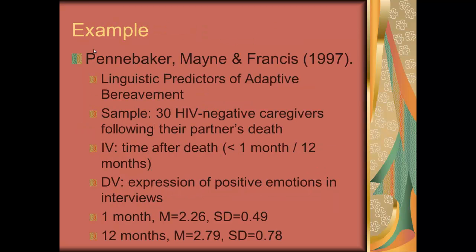Let's do an example. This is Pennebaker, Maine and Francis, 1997. They were looking at linguistic predictors of adaptive bereavement. Their sample was 30 HIV-negative caregivers following their partner's death from AIDS. The independent variable was time after death — either less than one month or 12 months. The dependent variable was the expression of positive emotions. At one month, the mean was 2.26 with a standard deviation of 0.49. At 12 months, the mean was 2.79 with a standard deviation of 0.78.